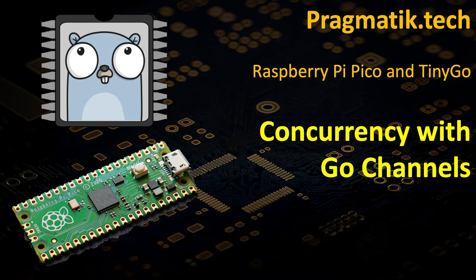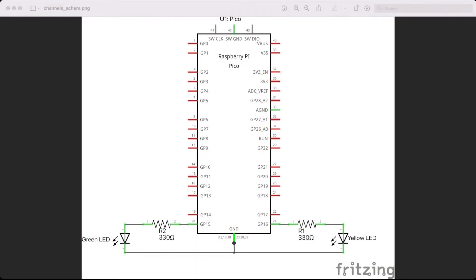Before we get into the code, let's look at the circuit diagram. It's a very simple circuit, similar to the GPIO and interrupt circuit we had previously with two LEDs. We removed the switch and just have two LEDs: one yellow connected to GPIO 16, and one green connected to GPIO 15. Both LEDs are connected through current-limiting 330 ohm resistors to ground. Super simple circuit, nothing complex.